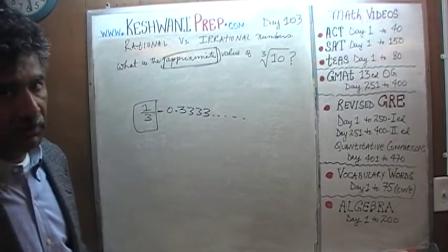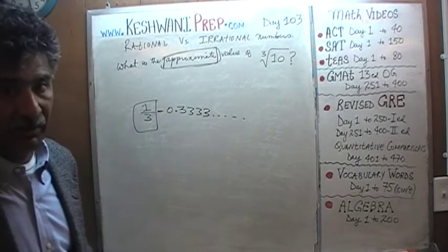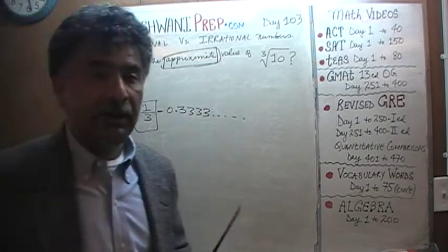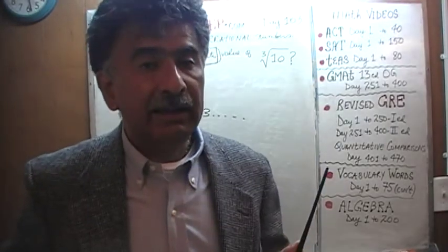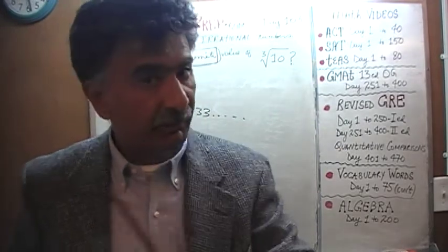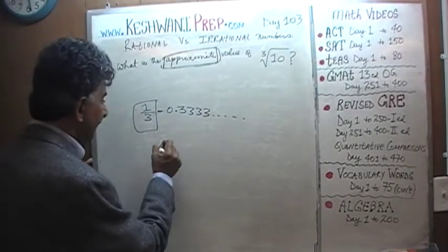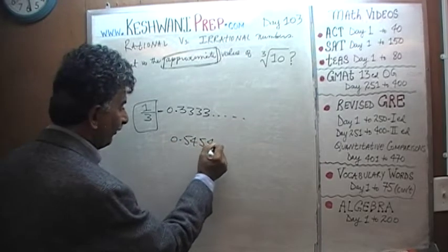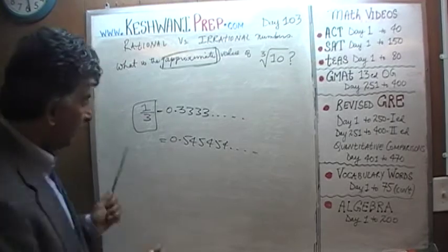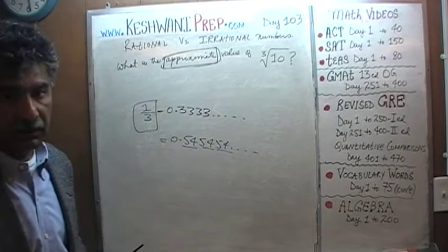If you can write a quantity as a fraction — as one number divided by another — that is the definition of a rational number. So if something can be written as a fraction, then it will either have a terminating decimal or it will have a repeating pattern. For example, 0.545454 and so on — it never ends, but it has a repeating pattern of 54, and therefore this quantity can be written as a fraction.